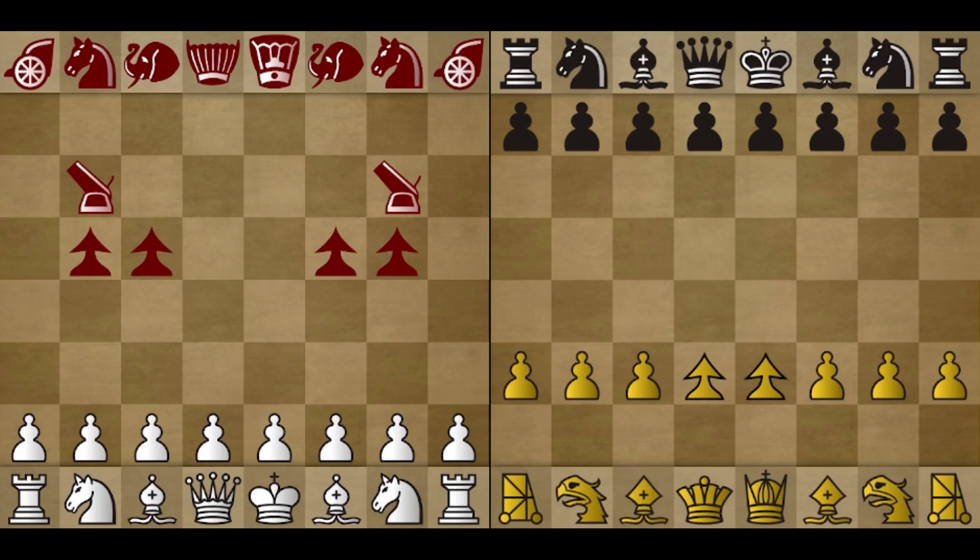Hello chess variant lovers. In this video I'm going to show you an interesting endgame that can happen in two patches variants, Synerges and Empire.